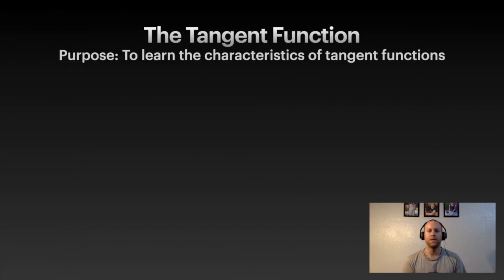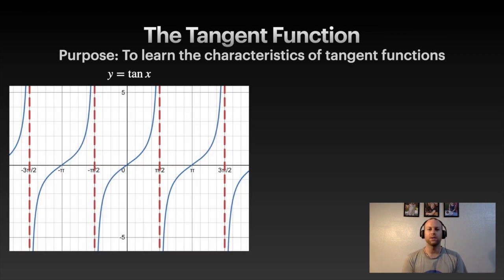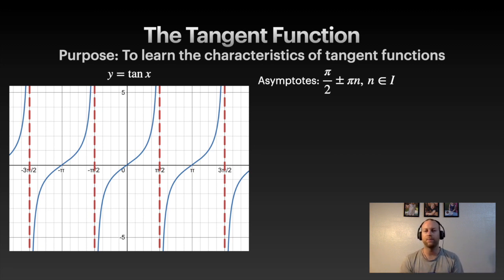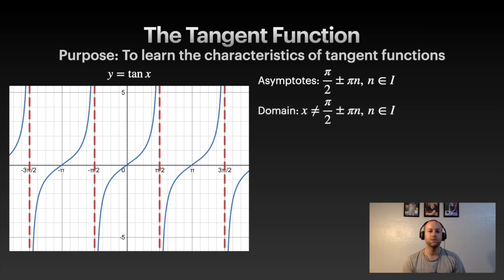If we say y = tan x, here's what the graph looks like — don't worry, I'm not going to ask you to graph this on a test, but it's good to know what it looks like. You can see asymptotes at the red dotted lines at π/2, and then at increments of π — so π/2, plus or minus π increments, where n is an integer. If you add π you get 3π/2, add another π and you get 5π/2.